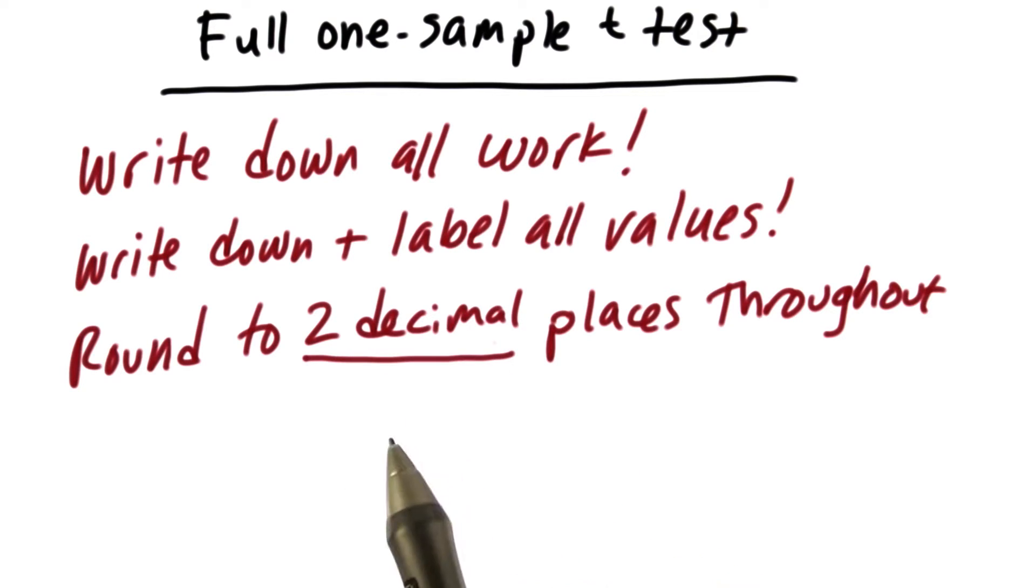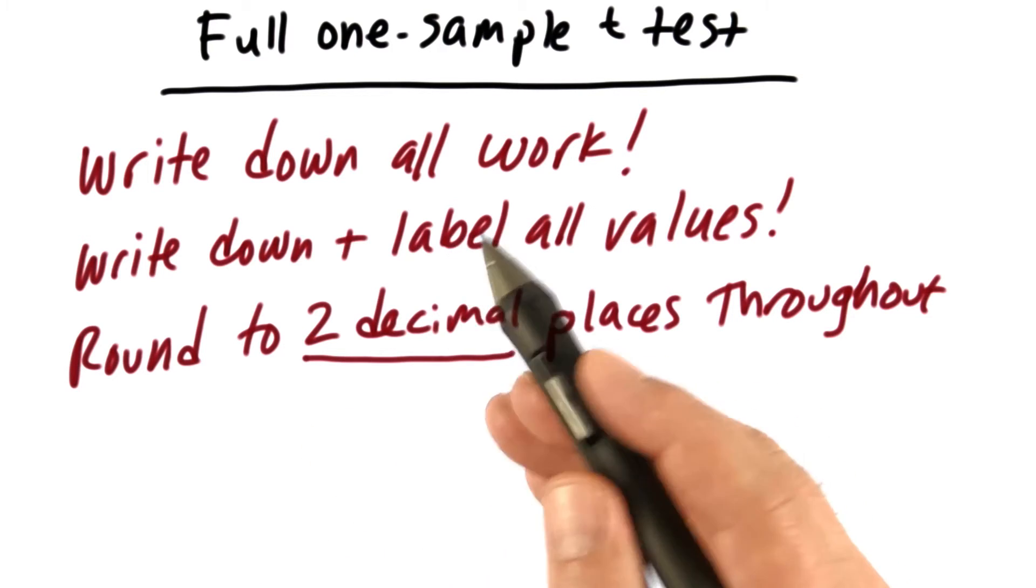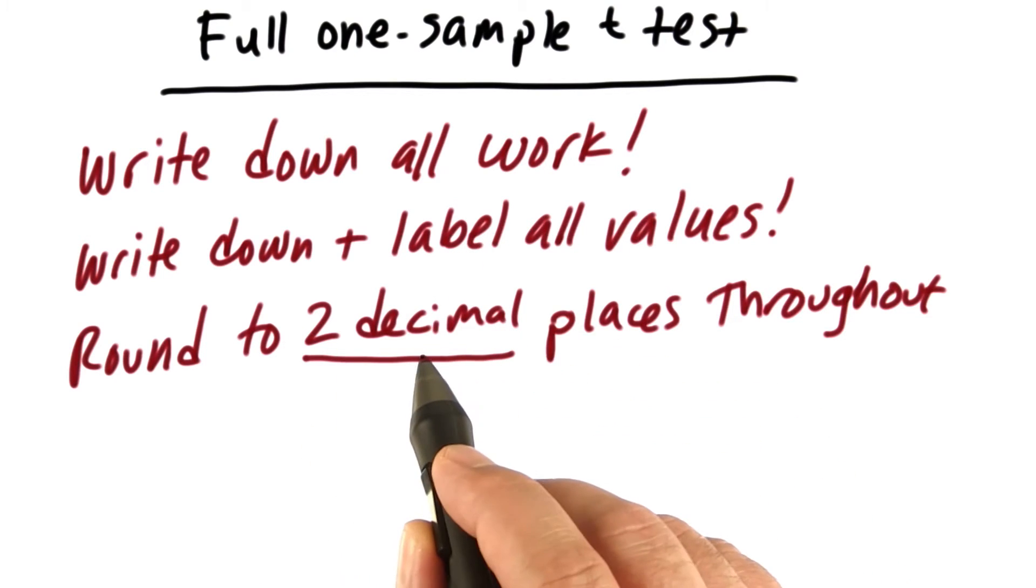If we were doing these problems for real, in other words, these were actual data from an actual research study, we wouldn't round to two decimal places throughout because that adds in rounding error. But just for the sake of you understanding how to work these problems and interpret them, two decimal places is fine.